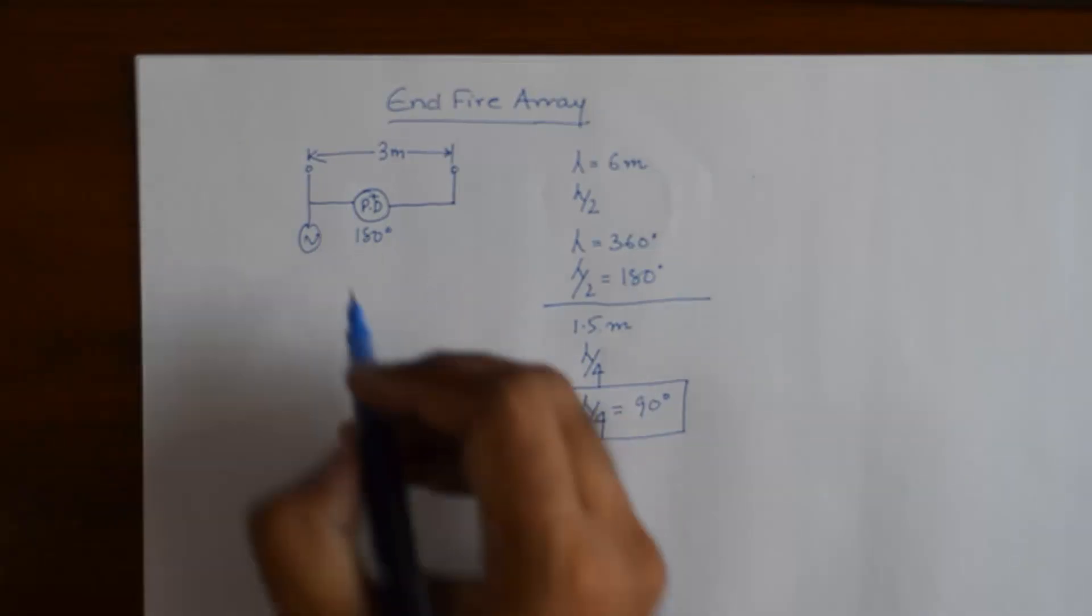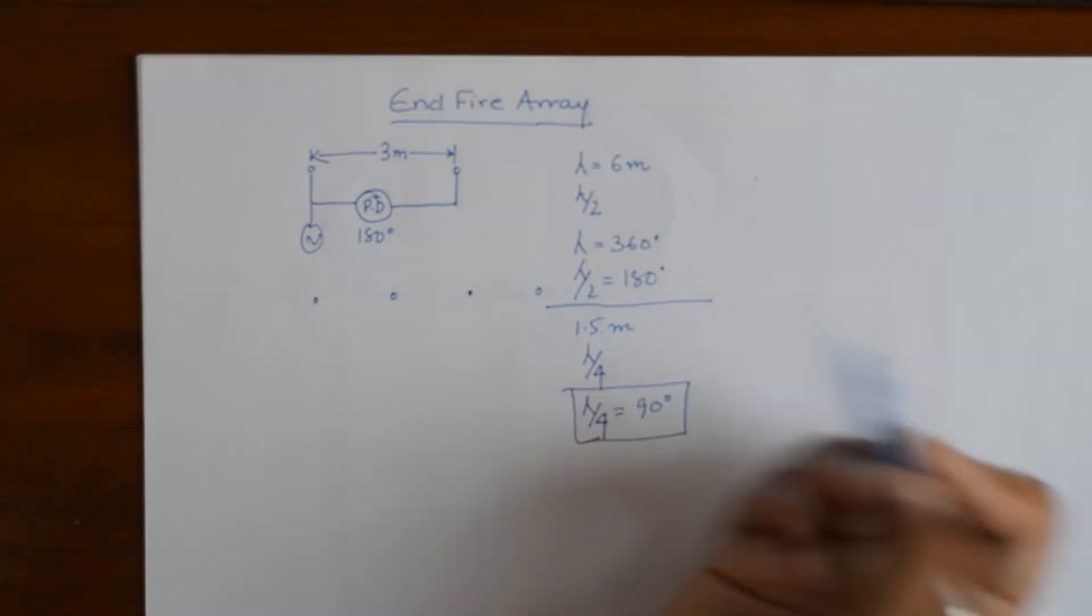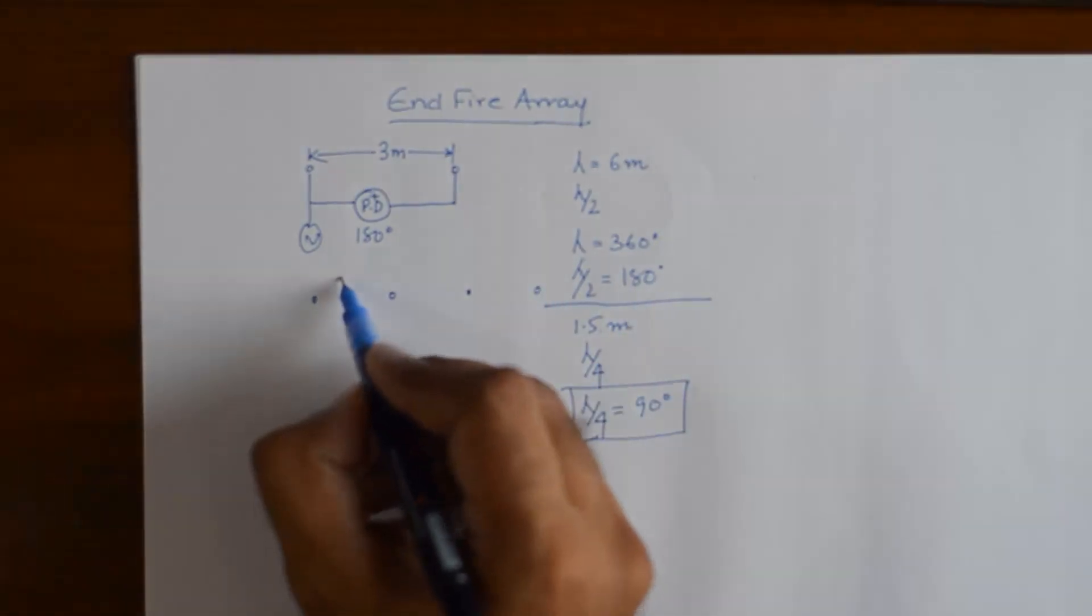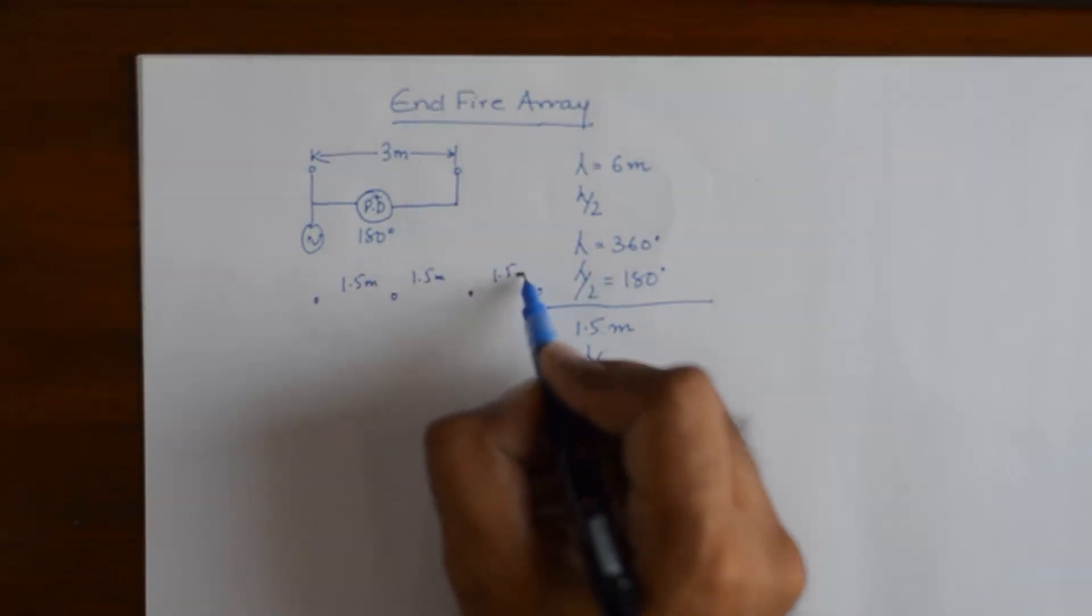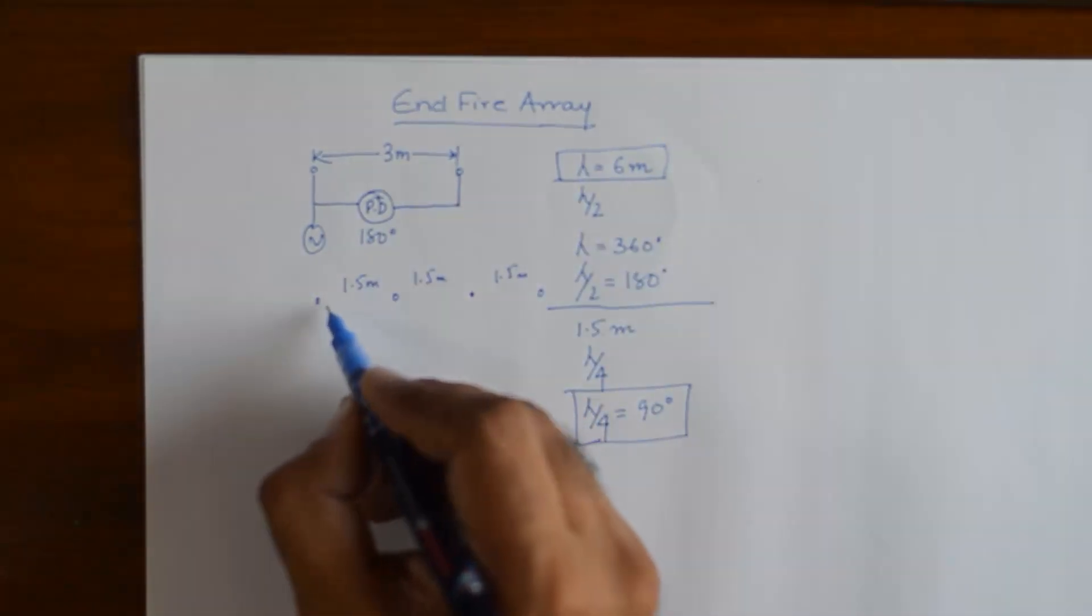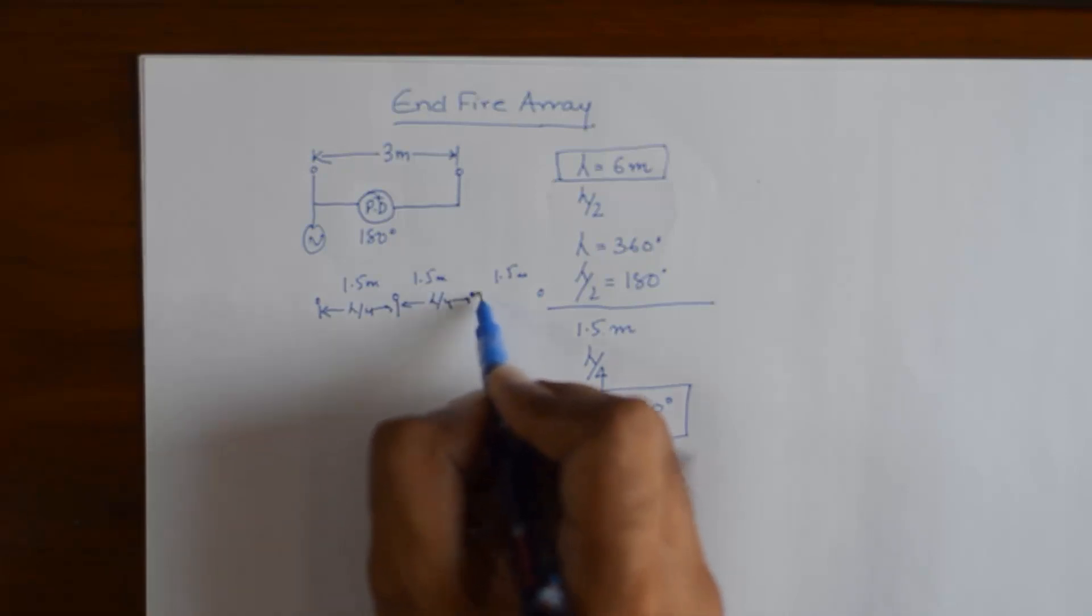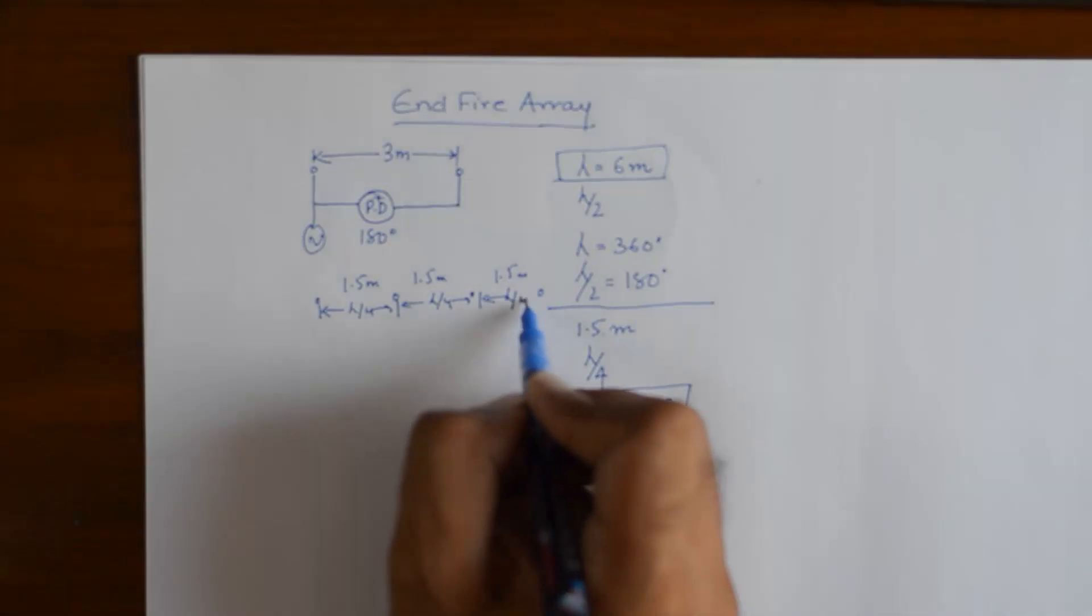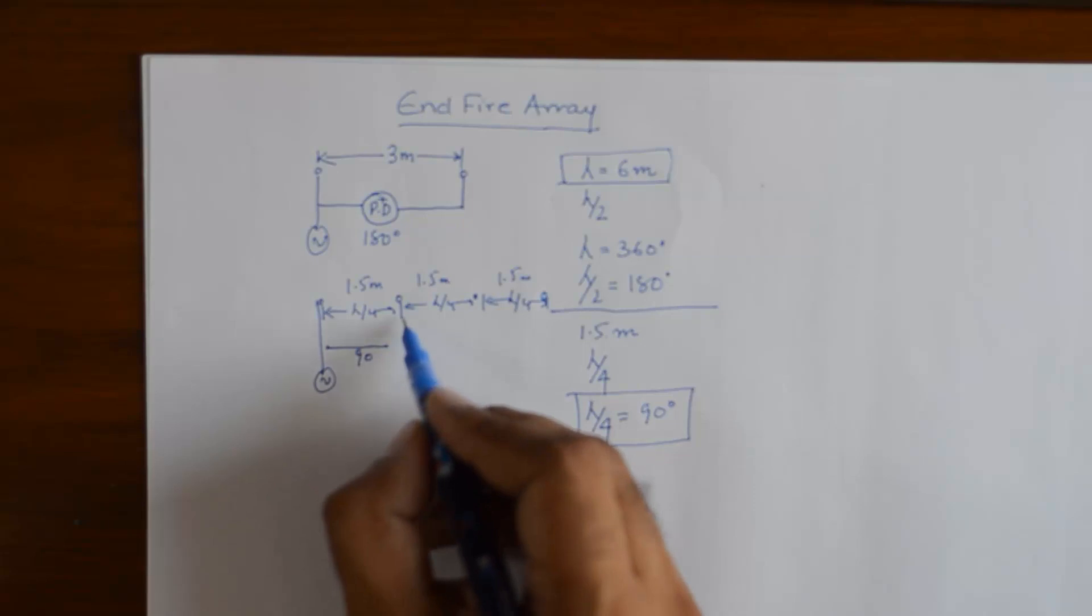So for example, had we designed a 4 elements endfire array with 1.5 meters distance between all the elements and lambda being 6, this could have been written as lambda by 4, lambda by 4, uniform spacing and the phase shift between the elements would have been progressively 90 degrees.